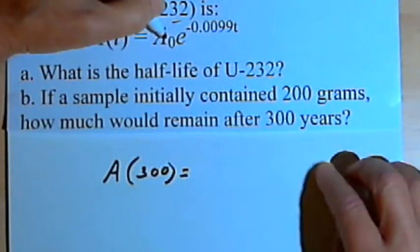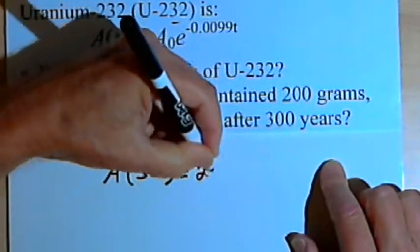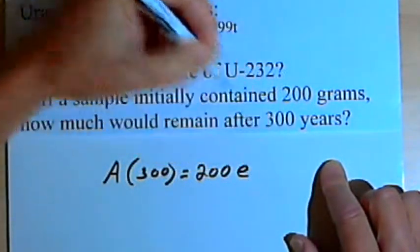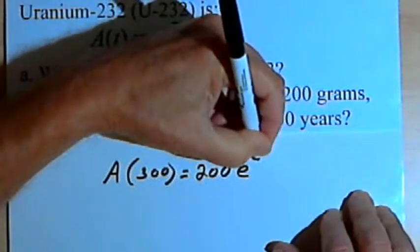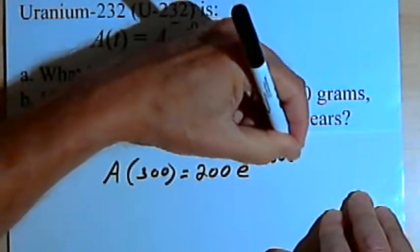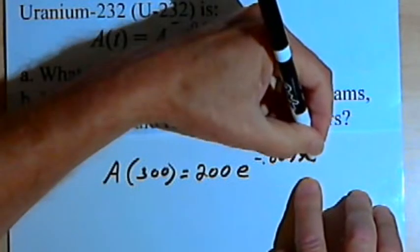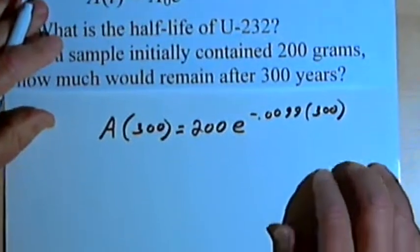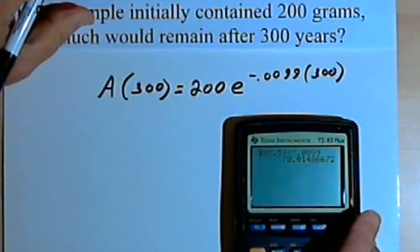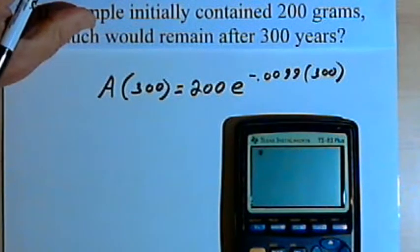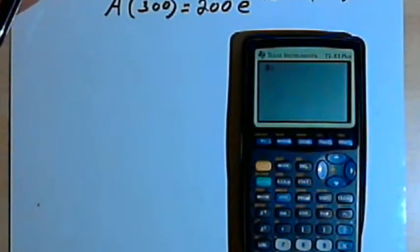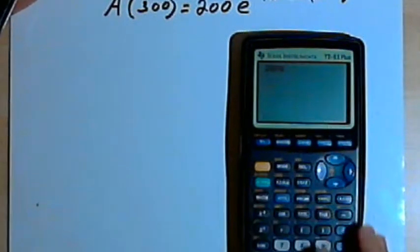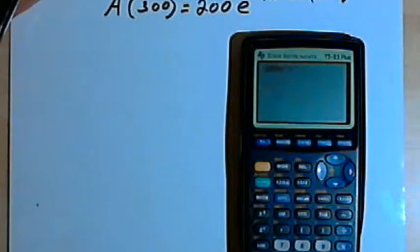And that's going to equal A sub 0. A sub 0 is the amount we begin with. That's 200 grams. I'm going to multiply that by e to the negative point 0.0099t. And t, once again, is 300. So this is pretty straightforward. We'll just plug the right side of the equation into the calculator. So I want 200 times e to the negative point 0.0099 times 300.